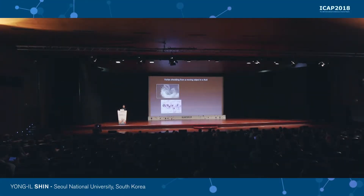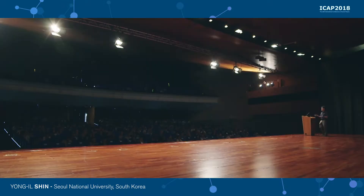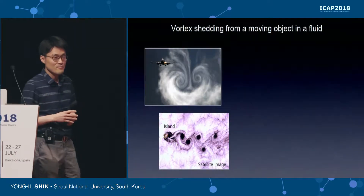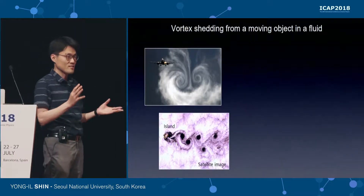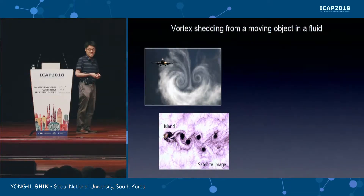Vortex shedding from a moving object in a fluid is a well-known phenomenon in fluid dynamics. It is fundamentally very interesting, and also for some industrial and engineering applications it is very practically important to know about vortex shedding.